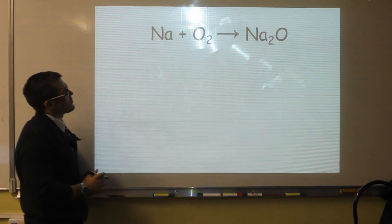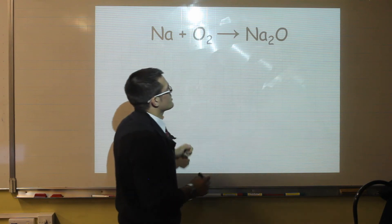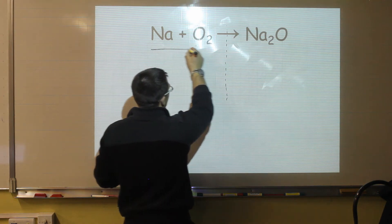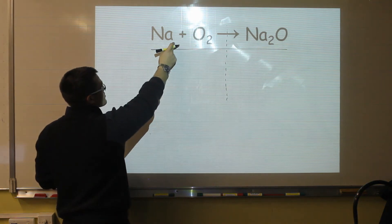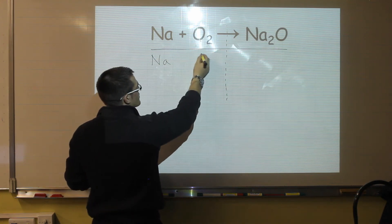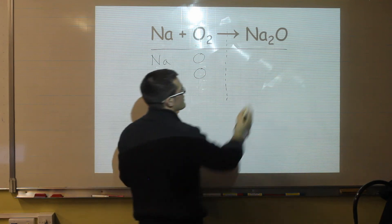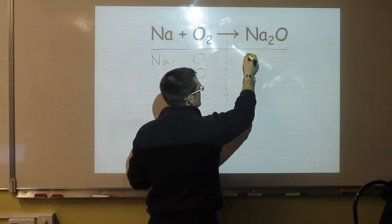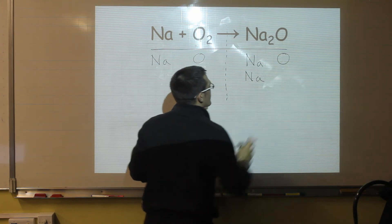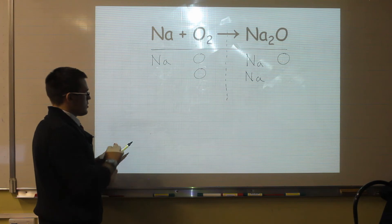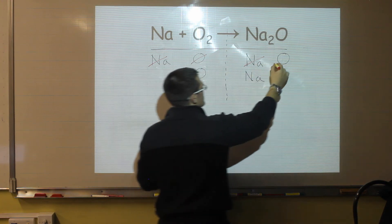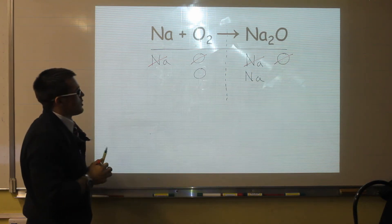Let's look at a slightly harder example. This time we have sodium metal plus oxygen going to sodium oxide. We split the equation in half and draw a line underneath. There's no number next to sodium, so that means we have one atom of sodium, and we have two atoms of oxygen. On this side of the equation, we have a two next to the sodium, so I have two sodium atoms, and no number next to the oxygen, so that means I have one.